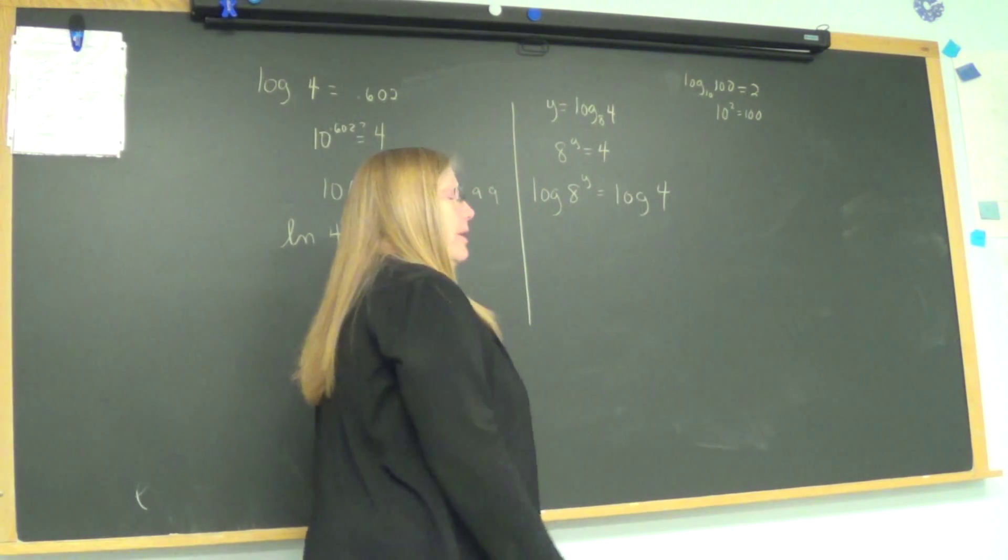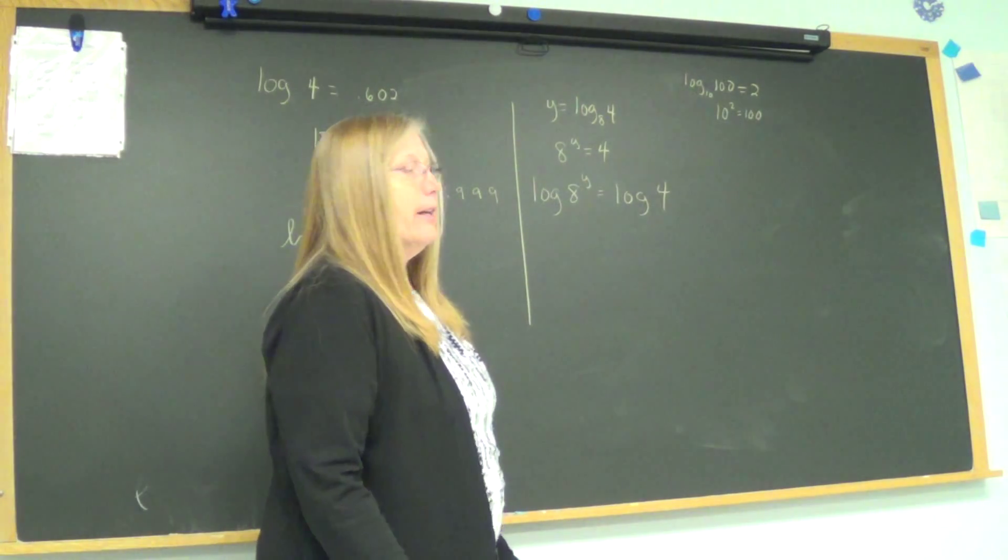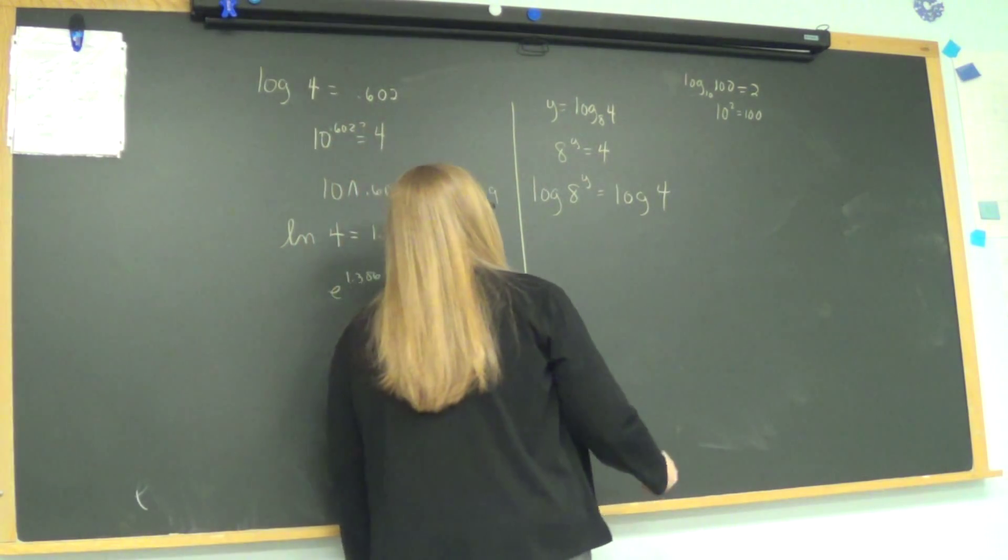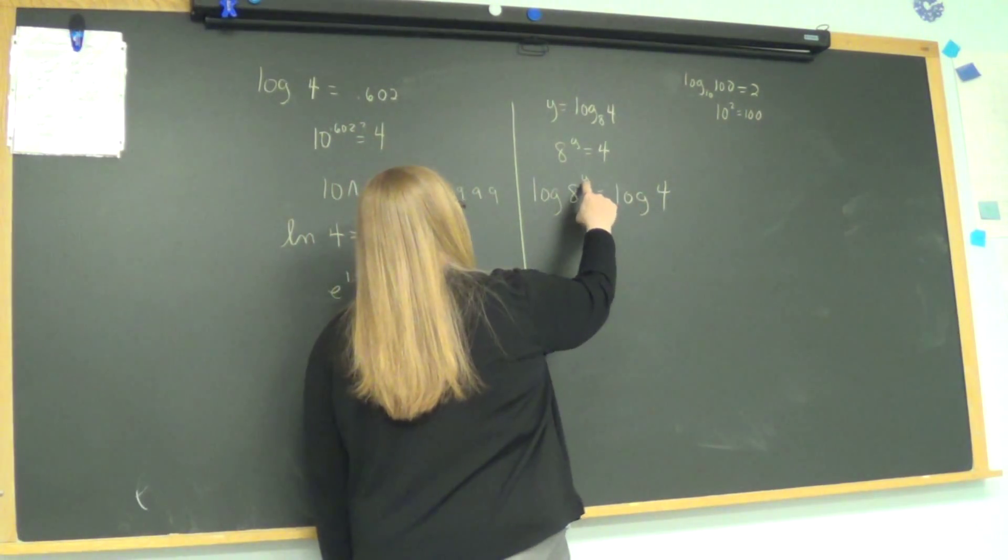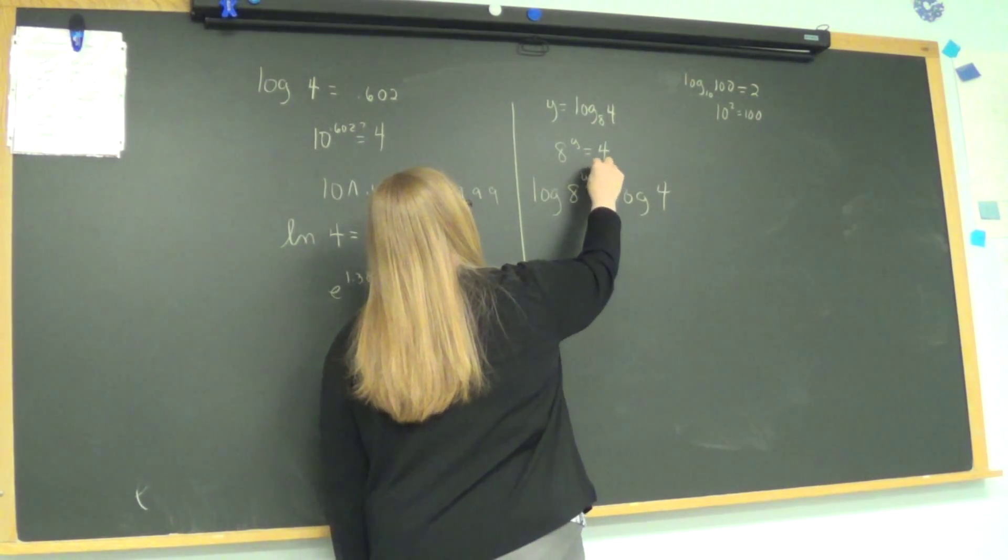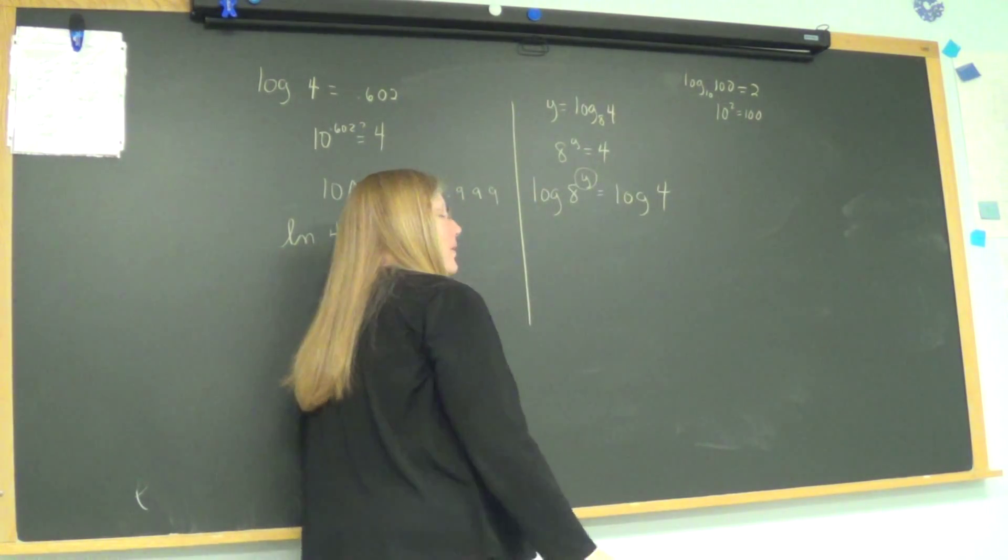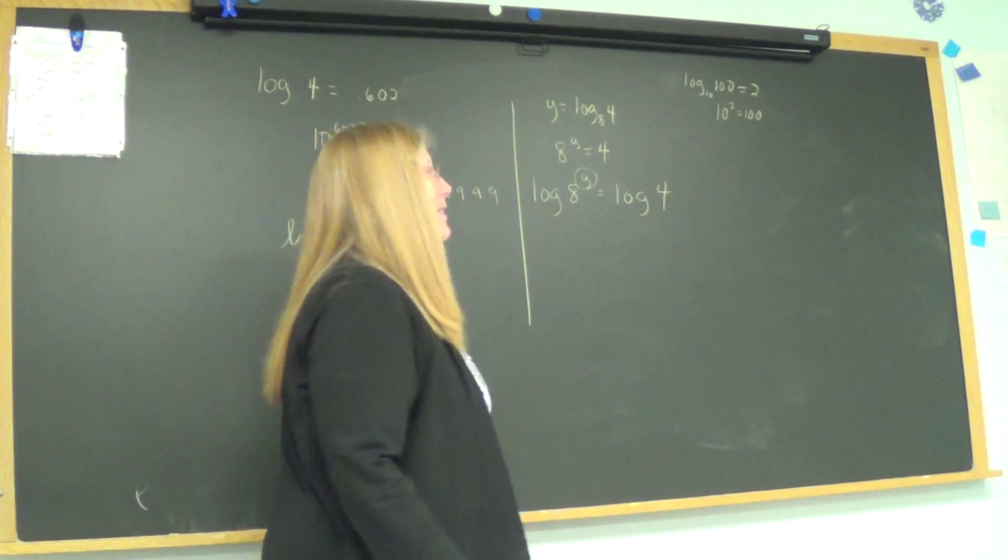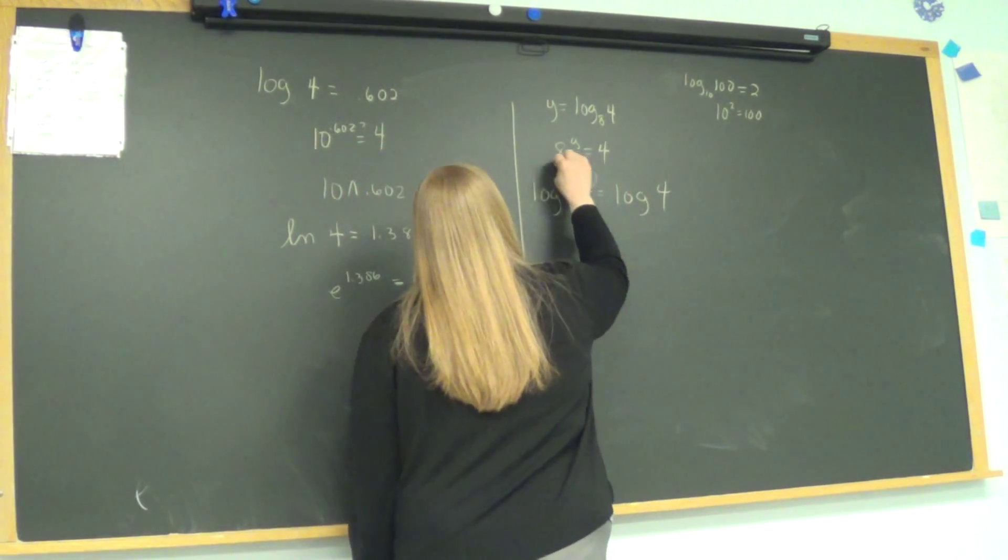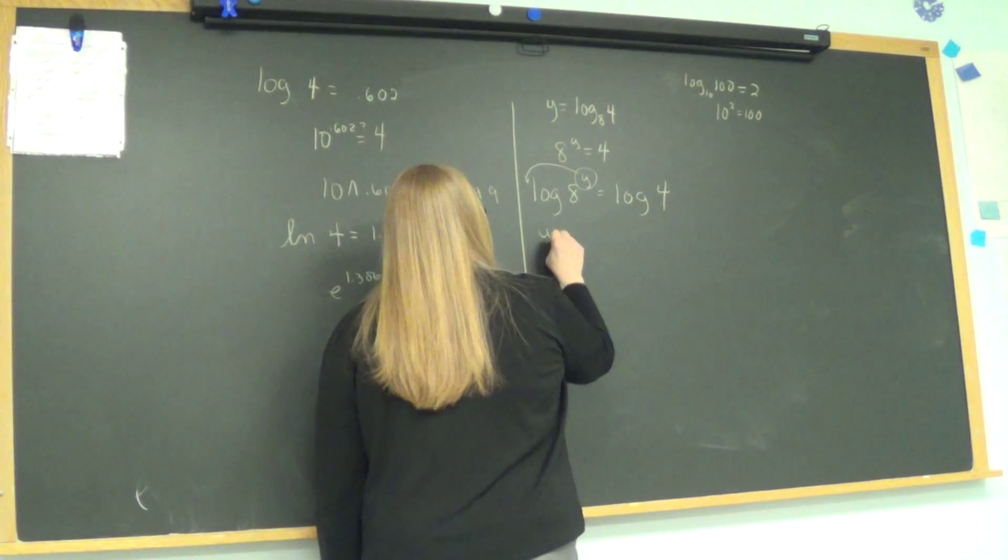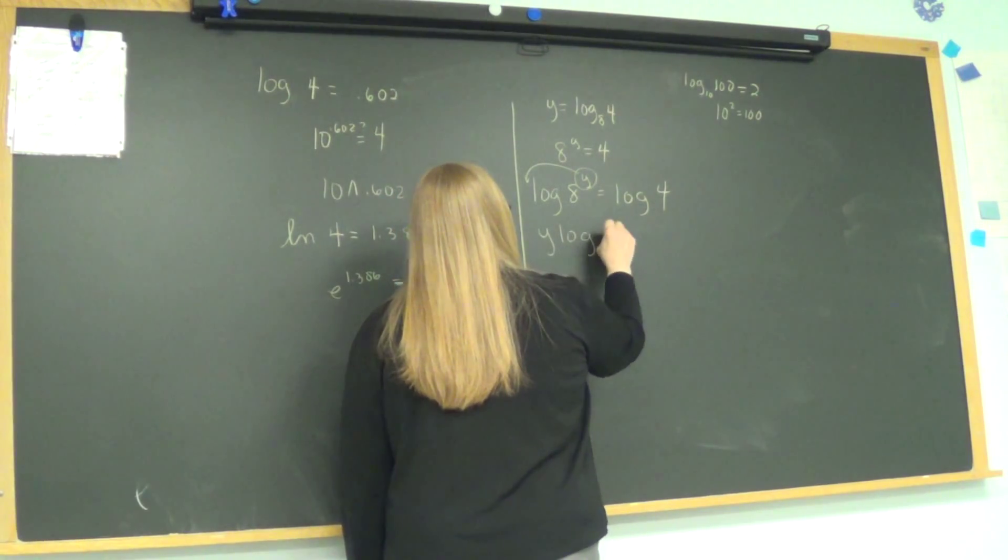So I'm going to take the log of both sides. As long as you take the log of one side and take the log of the other, you're fine. Now we have a log exponent, a law of logarithms that allows us to do what with this exponent? Where else can it fly? All right, an exponent can become a coefficient. So we're going to let it fly out in front.